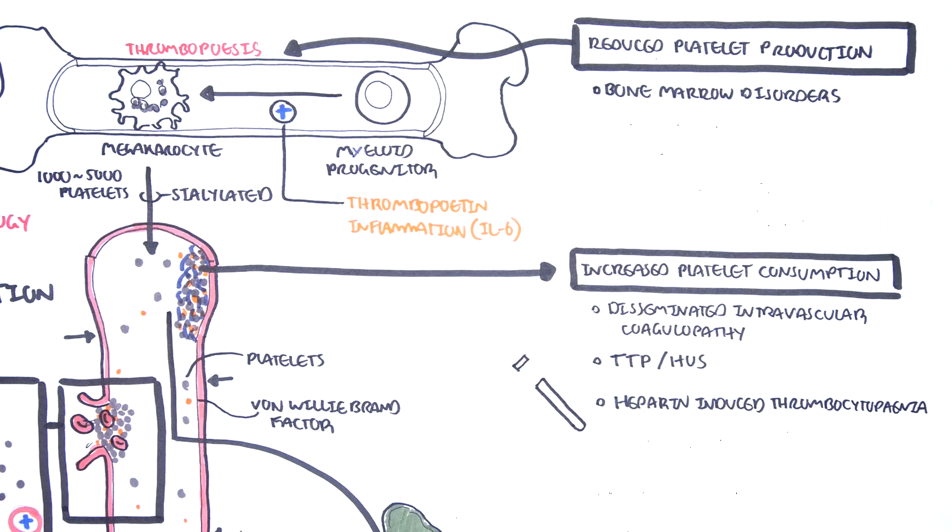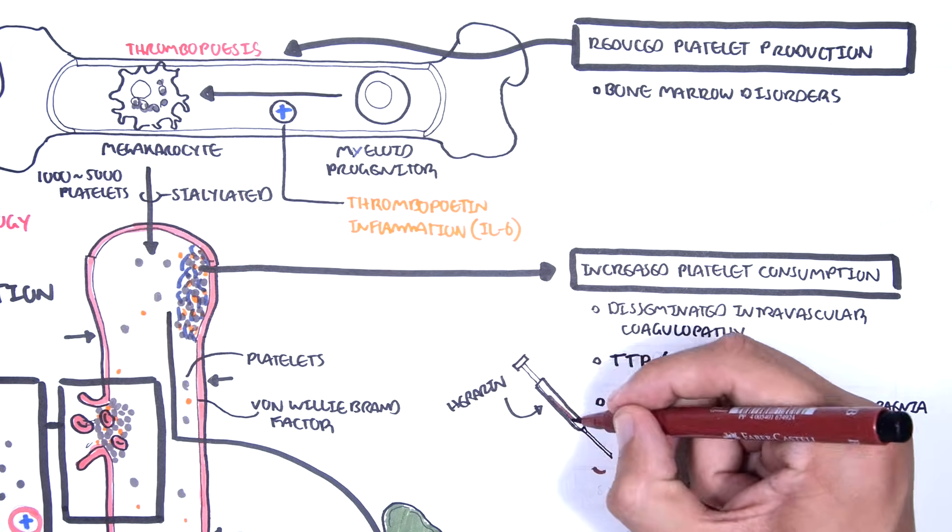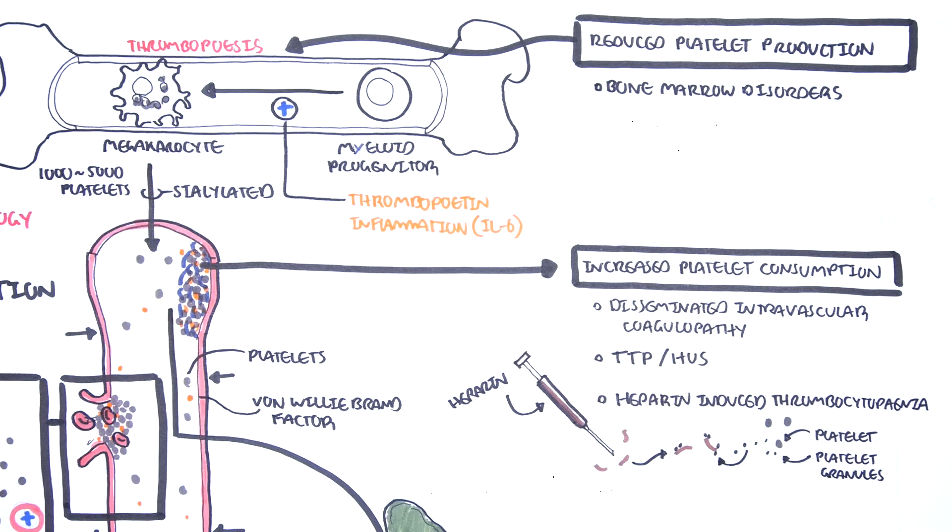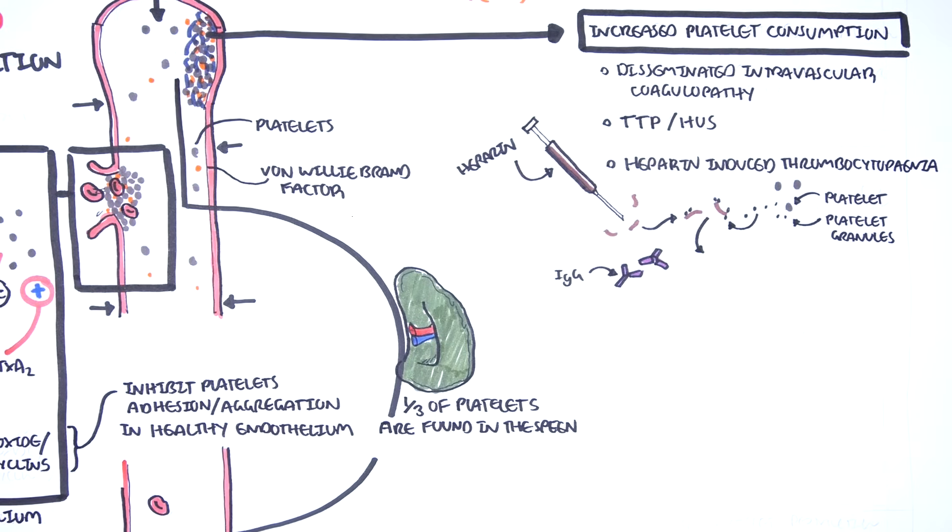Heparin-induced thrombocytopenia occurs when the anticoagulant heparin is administered. Heparin binds with platelet factor 4, which is produced by the platelets, forming a heparin-platelet factor 4 complex.